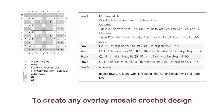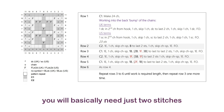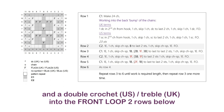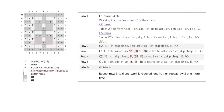To create any overlay mosaic crochet design you will basically need just two stitches: a single crochet (US) or double crochet (UK) into the back loop only, and a double crochet (US) or treble (UK) into the front loop two rows below.